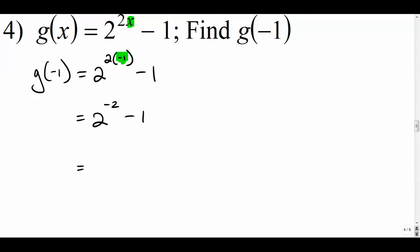2 raised to the negative 2 power. Hopefully you're pretty good on your exponent rules. Anything raised to a negative power actually turns into, it goes to the bottom of a fraction and turns to a positive exponent. So this is 1 over 4. 2 squared is 4, minus 1.